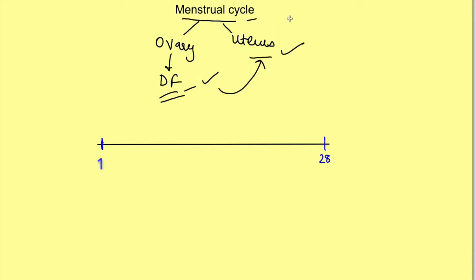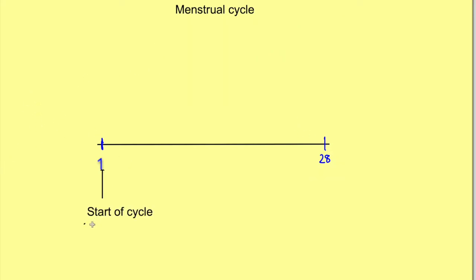The duration of the menstrual cycle may range from 21 to 40 days, however for understanding we will take an example of 28 days. Day 1 is the start of the cycle. At the start of the cycle the levels of estrogen and progesterone, the female hormones, are very low.